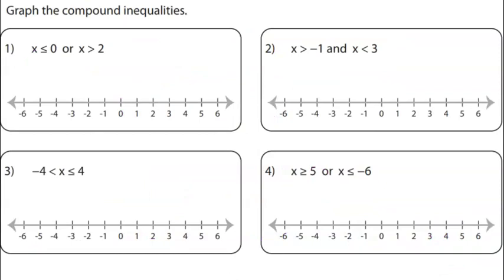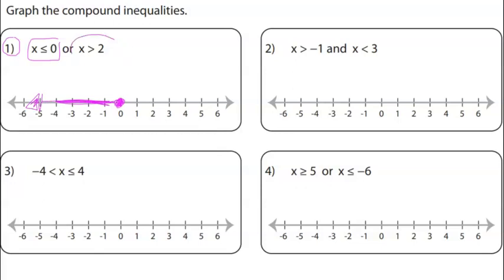Let's practice graphing compound inequalities. For number 1: x ≤ 0 or x > 2. Graph x ≤ 0 with a closed circle at 0, shading left. Then graph x > 2 with an open circle at 2, shading right — 3, 4, 5, 6. Since it's an OR graph, the shading goes in opposite directions.